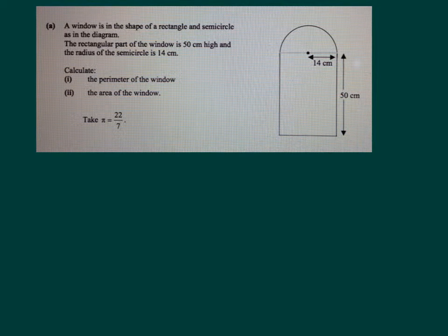This is a window in the shape of a rectangle with a semicircle, so there's two different shapes here. They're likely to ask you about things like perimeter and area, and if you read part 1 and part 2, that's exactly what they ask you.